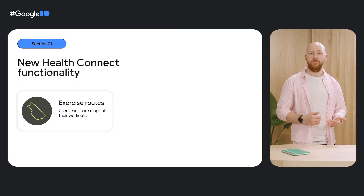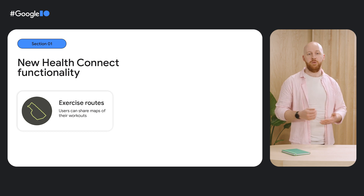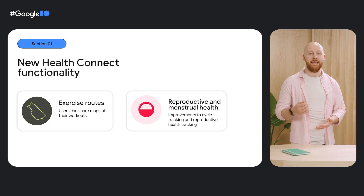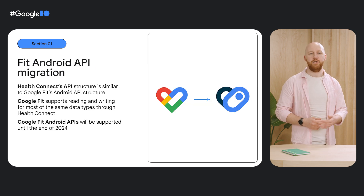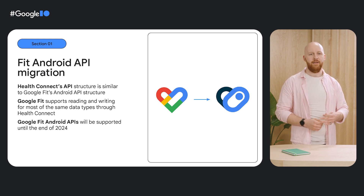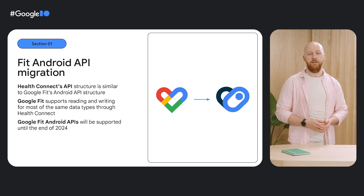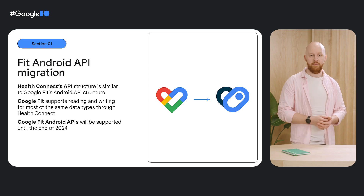We've also been hard at work on new Health Connect features, which will be available with the Android 14 release. For example, a new Exercise Routes feature, which will allow users to share GPS maps of their workouts between apps, and improvements that can make it easier to track reproductive and menstrual health. For our existing Google Fit developers, with Health Connect coming to the Android framework, it's a great time to consider migrating from the Google Fit Android APIs to Health Connect APIs. As we announced at I/O last year, the Google Fit Android APIs will be supported until the end of 2024. Check out the migration guides in our documentation for more information.